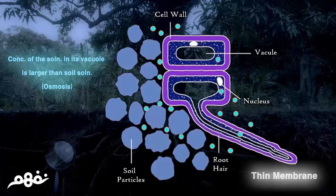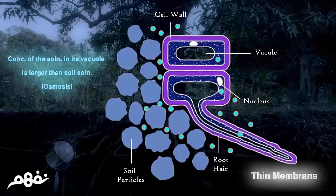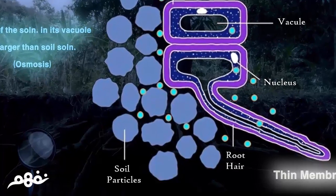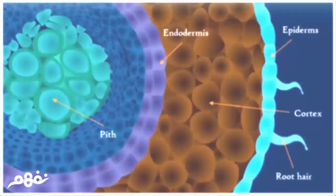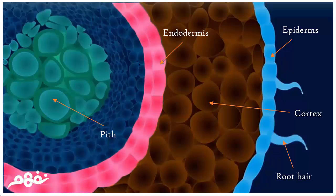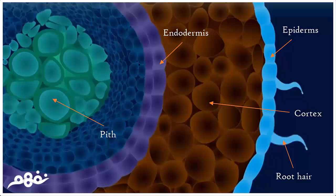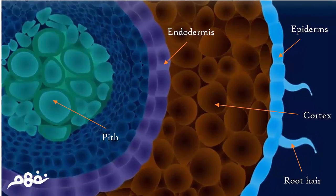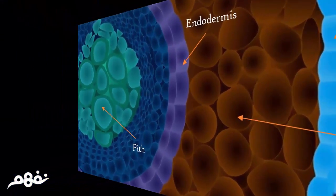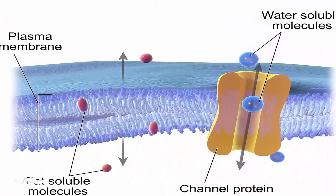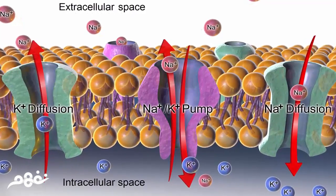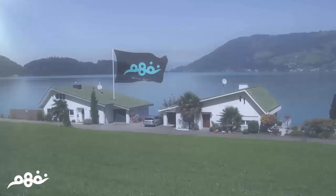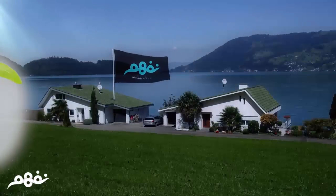Because the soil has an extremely large amount of water compared to the water concentration inside the root hair vacuole, this drives water transmission from the soil into the root by osmosis through its semi-permeable membrane. The endodermal cells regulate water crossing into the tissue called xylem vessels.